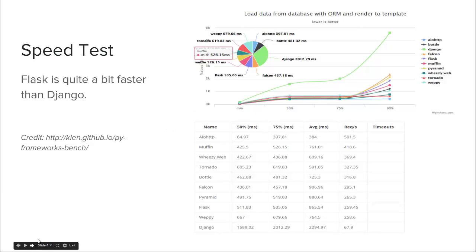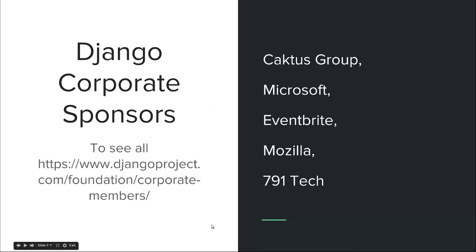When looking at the health of a framework, you want to see what corporate sponsors are backing it. Django has been around for over ten years and has grown into a large nonprofit organization with a ton of corporate sponsors. Companies like Mozilla, Microsoft, and Eventbrite have sponsored DjangoCon. There's so much money that relies on Django continuing to work that you're not going to see Flask overtake Django anytime soon.